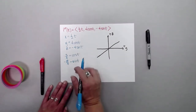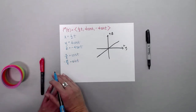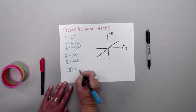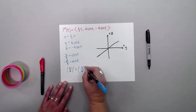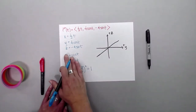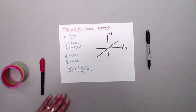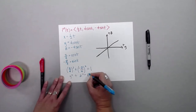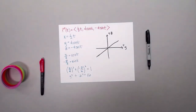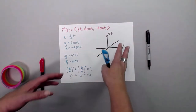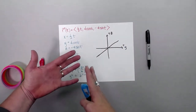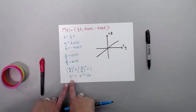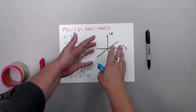Using the Pythagorean identity — cosine squared theta plus sine squared theta equals 1 — I substitute: cosine squared of t is (y/4)², and sine squared of t is (-z/4)², giving (y/4)² + (-z/4)² = 1. Simplifying by squaring and multiplying through by 16 gives y² + z² = 16. That's a circle in the yz-plane. In three-dimensional space, that's a cylinder coming out along the x-axis with a radius of 4, where x is unrestricted.